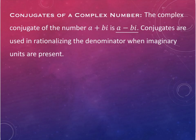So it's exactly the same thing — change the sign in the middle, and you have the conjugate. Conjugates are used in order to rationalize denominators when you have imaginary components in the denominator. You've rationalized denominators before you ever encountered imaginary units — but you were doing it with radicals.